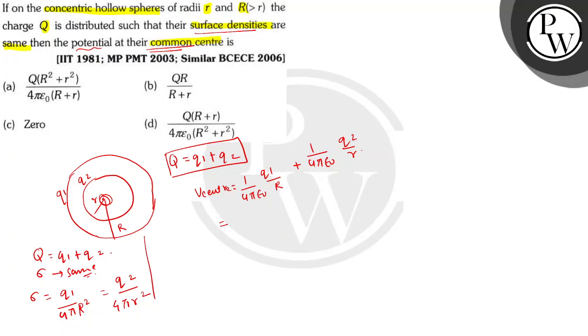So the value of Q1 will be 4π sigma capital R square and Q2 will be 4π sigma small r square. Therefore, Q will be 4π sigma times capital R square plus small r square.